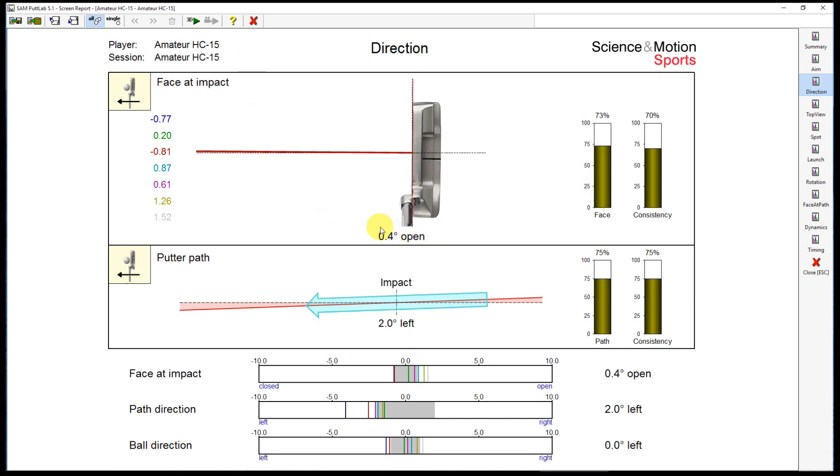If you want to translate these angles into a 4m putt, there is a thumb rule that you start missing 4m putts if your angle at impact is more than 1 degree to the left or to the right. And depending on your speed of the ball, it might be even much less.